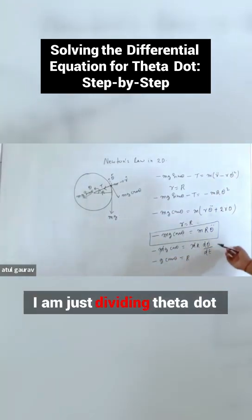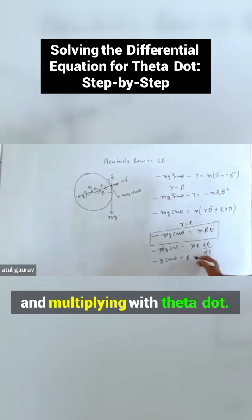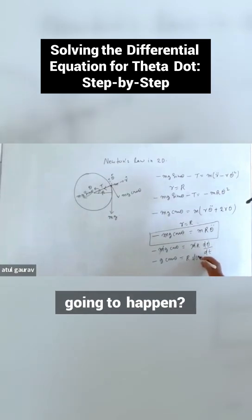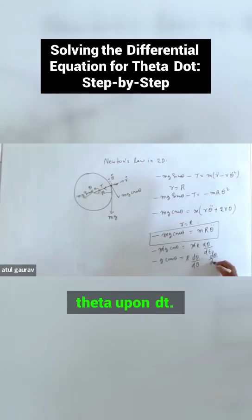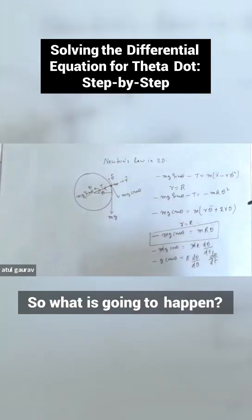What am I doing? I'm just dividing by theta dot and multiplying with theta dot. So what's going to happen? d theta dot upon d theta into d theta upon dt.